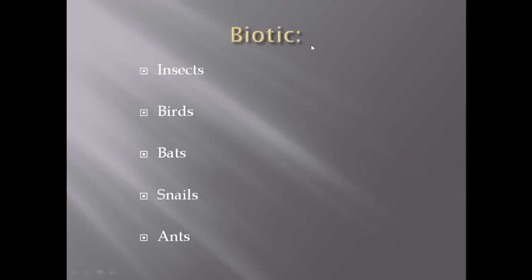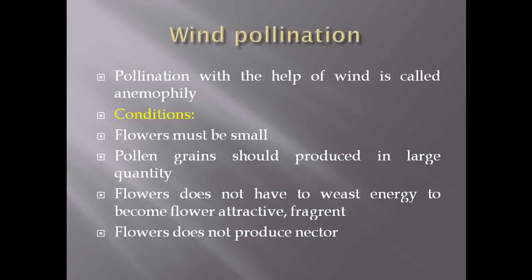Under biotic agencies, they are categorized into insect pollination, bird pollination, bat pollination, snail pollination, and pollination with the help of ants. One by one, we are going to discuss each agency and what are the characteristic features required for the plants to carry out pollination using that type of agency. Let's first see the abiotic type, starting with wind pollination.